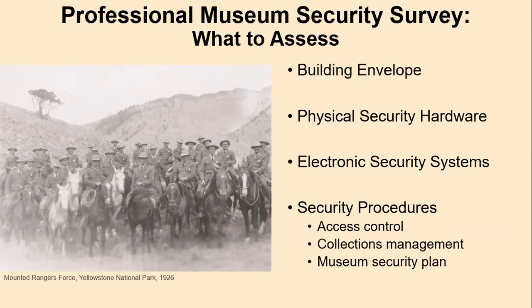They should assess your physical security hardware and electronic security systems — what types are present in different areas of your building, are they appropriate to what they are protecting, and are they functioning as intended? The professional should make recommendations as to whether systems need to be adjusted or if new systems are needed. They should also assess the practices that go on in your organization — not just within your collection staff, but from anyone who works at your building. Is everyone maintaining consistent levels of access control, particularly to restricted areas like storage rooms? Is your back-of-house staff managing collections properly, or are they just leaving objects lying around on tables for days on end?